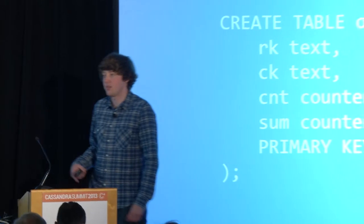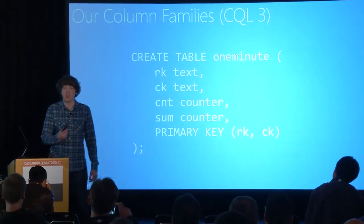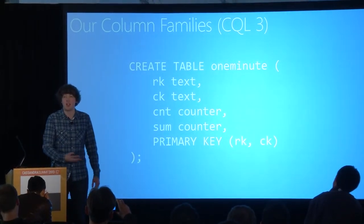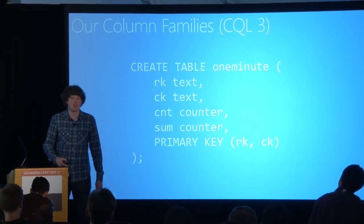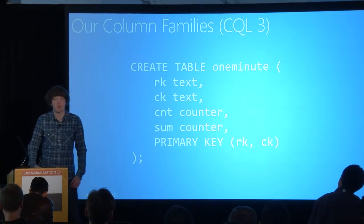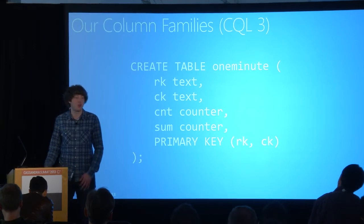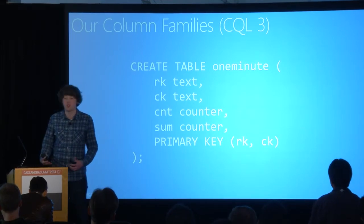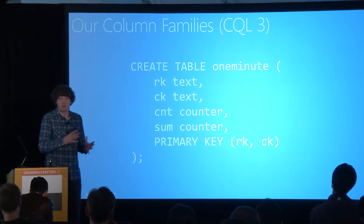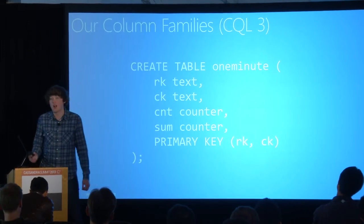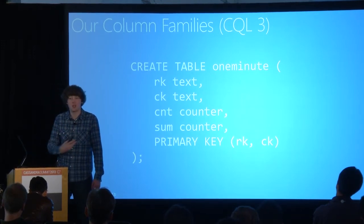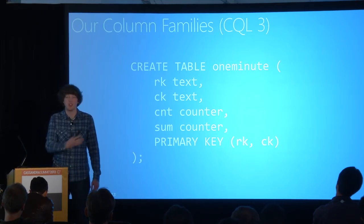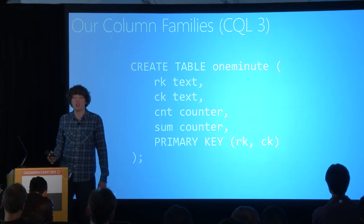In terms of how we store the data, we have a very simple schema used for all of our column families. We have the row key, which is text — basically an encoded representation of a tenant ID and a metric name. Since we have this as the first component in the primary key, a single tenant gets partitioned against several machines within our cluster. So larger customers with, say, 1,000 virtual machines can have the load from their entire deployments spread out over the cluster. The clustering key contains the timestamp first, so we have data sorted by timestamp, and also has metadata fields associated with that particular data point — such as process name, machine name, or region name.